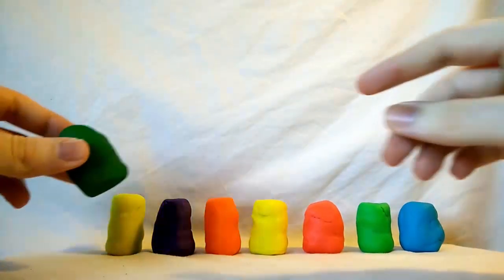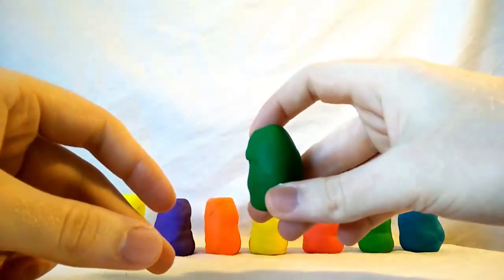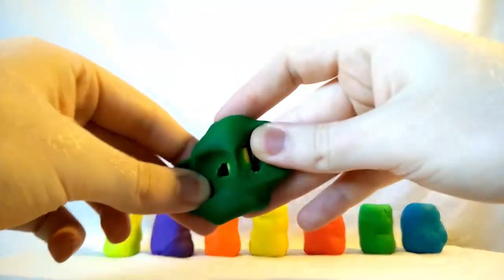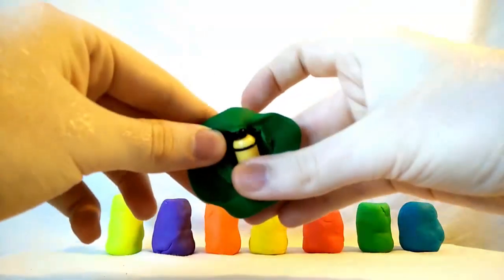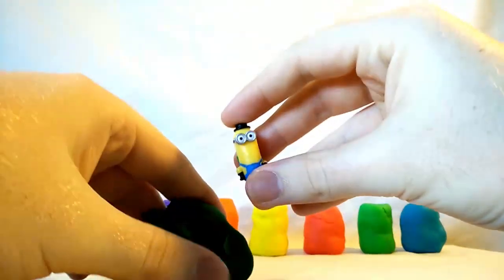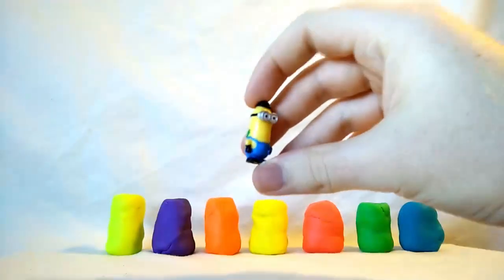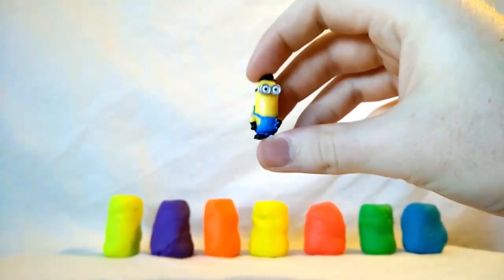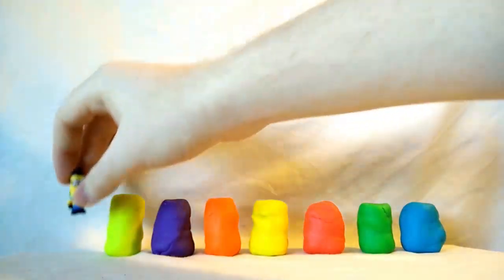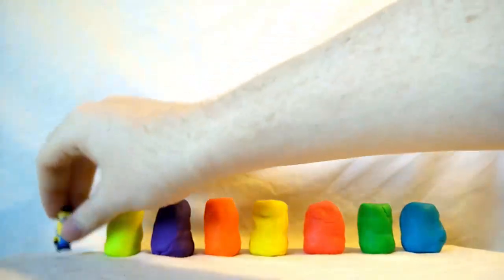We're going to open up the dark green egg first. I wonder what's inside this dark green egg. Oh look! It's a British Minion! Hello there! Tally-ho! Cheerio! Carry on, good chaps! That's a lot of fun. The British Minion was in the green egg.